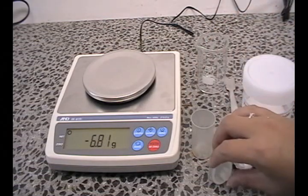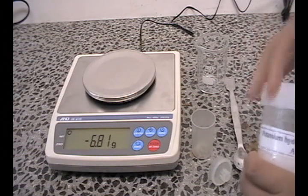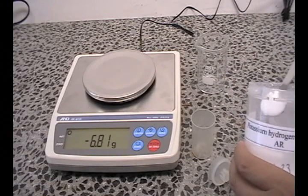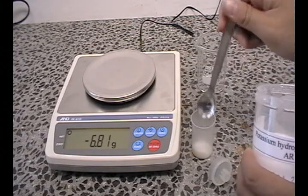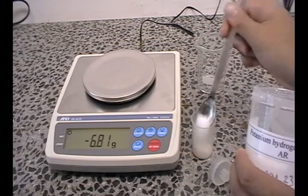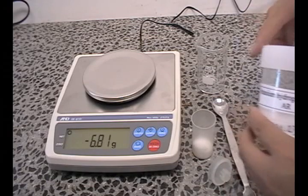At this point, you need to estimate what approximately 4 grams could look like. Using a spatula, transfer what you think approximately 4 grams could be into the empty weigh bottle. When you are done, place the lid back onto the substance bottle.